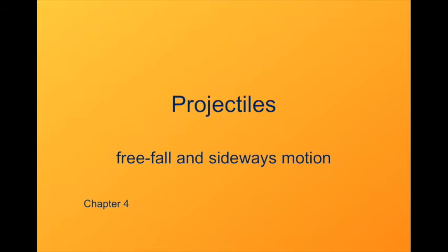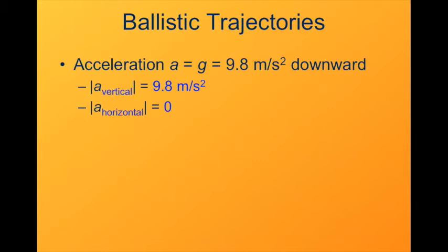Free fall can be rising, it can be falling, it can be going up and then coming back down. The same equations apply to all those possible situations. The principal characteristic of ballistic trajectories is that the acceleration is g downward. That means its vertical component is 9.8 meters per second squared in the down direction. The horizontal component of acceleration is zero.